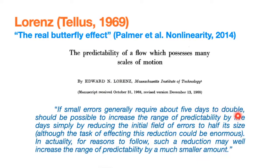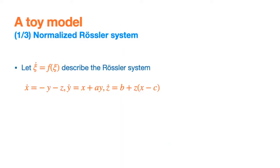Lorenz suggests that even though you can make your initial conditions more precise in atmospheric or hydrodynamic prediction, this may not translate to a longer prediction horizon. I'll explain what this is about using a toy problem.